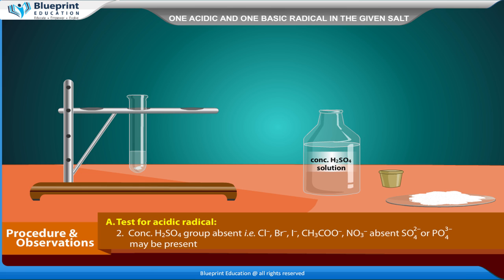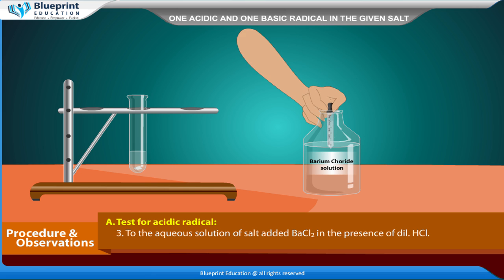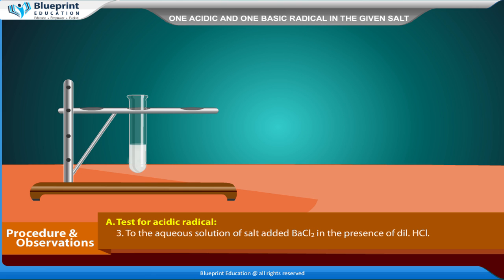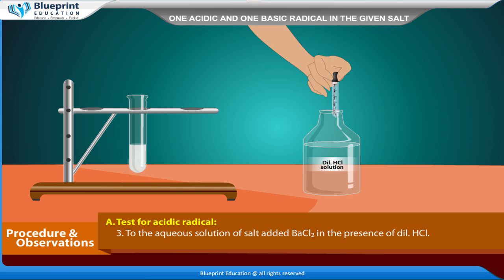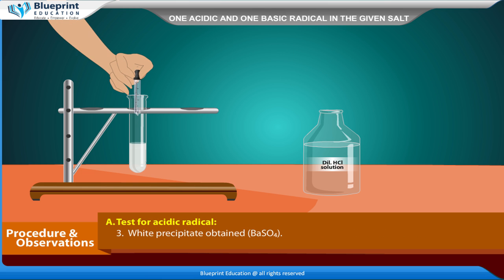SO₄²⁻ or PO₄³⁻ may be present. To the aqueous solution of salt, add BaCl₂ in the presence of dilute HCl. White precipitate of BaSO₄ obtained.